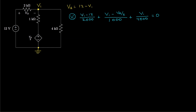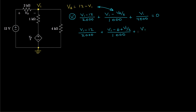We have the unknown node voltage V1 and the unknown element voltage VA, but we have an expression relating VA to V1. Rewriting: V1 minus 12 over 2,000, plus V1 minus — now VA over 2 is 12 over 2 which is 6, and then minus V1 over 2, so that gives a positive V1 over 2 — all over 1,000, plus V1 over 4,000, equals zero.